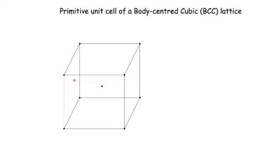In a primitive unit cell, the lattice points are located only at the corners. For some applications, for example in the determination of the reciprocal lattice, it is useful to work with a primitive unit cell. There are infinitely many primitive unit cells possible for a given lattice. In this video we describe one such primitive cell associated with the BCC lattice.